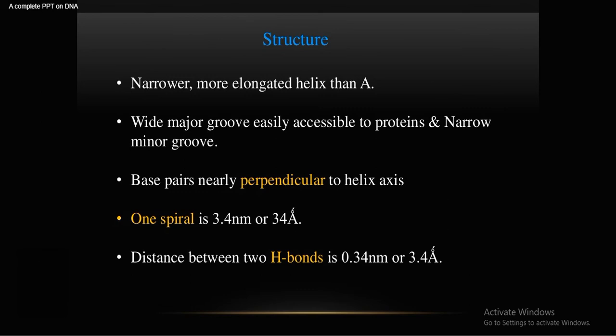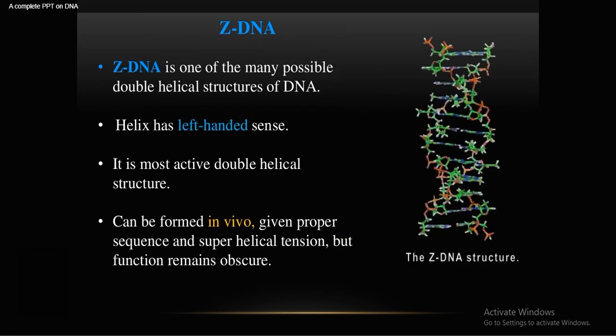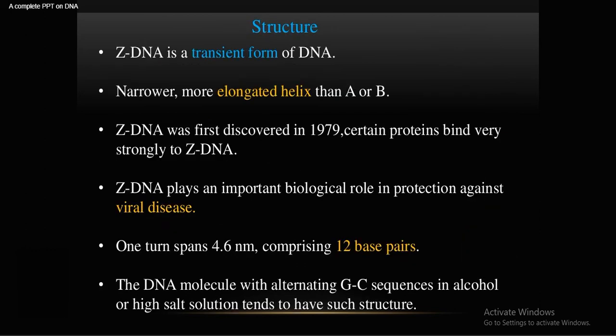B-DNA makes one spiral around 3.4 nanometers (34 angstroms), with a distance between two hydrogen-bonded base pairs of around 0.34 nanometers. Z-DNA is one of the many possible double helix structures of DNA. Its helix is left-handed, and as the most active double helix structure, it can be formed in vivo given the proper sequence and superhelix tension, though its function remains somewhat obscure. Z-DNA has a narrow, more elongated helix than both A and B forms.